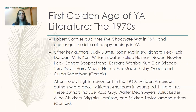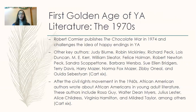In the 1970s we get the first golden age of YA literature. Robert Cormier publishes The Chocolate War in 1974 and challenges the idea of happy endings in YA — before that, even books with difficult problems would end very happily. Also, after the Civil Rights Movement in the 1960s, African American authors begin writing about African Americans in young adult literature. Authors include Rosa Guy, Walter Dean Myers, Julius Lester, Alice Childress, Virginia Hamilton, and Mildred Taylor among others — a really key feature of the golden age of YA in the 70s, and we start to see more diversity.